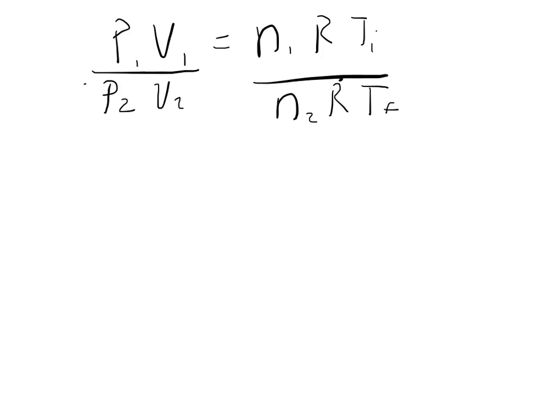Now we can cancel out anything that doesn't change. The problem tells us that the pressure remains constant, so if this is the same number, it cancels out. We also know that there's no moles added or taken away, so this is constant. And the gas law constant, the word constant is in the definition, so it doesn't change. What we have now is that the initial volume over the final volume is equal to the initial temperature over the final temperature.